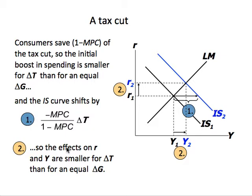You may wonder: the IS curve is shifting to the right, but how come we show it here as a negative shift, because we have a minus sign? The reason is, in this particular case, when we have a tax cut, delta T is a negative number. This negative delta T times the negative MPC — these two negative signs cancel each other out. As a result, this whole term becomes a positive number, and since it's positive, the IS curve shifts to the right.